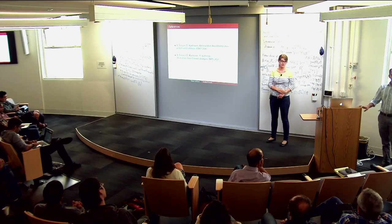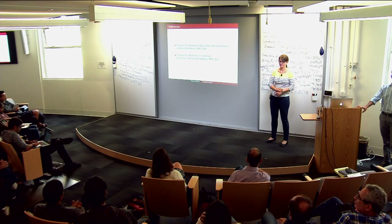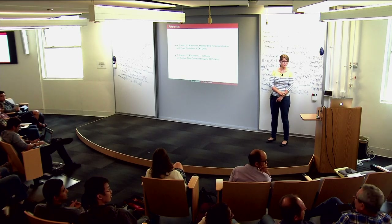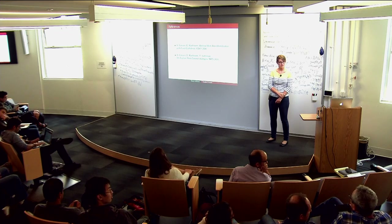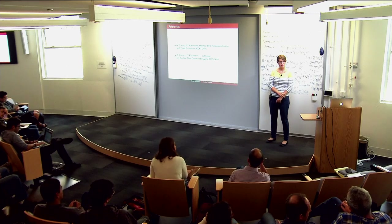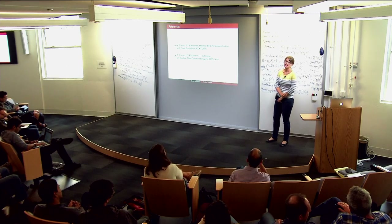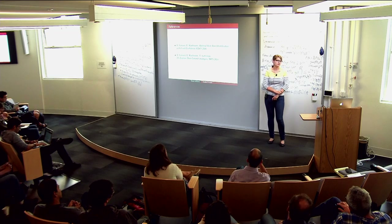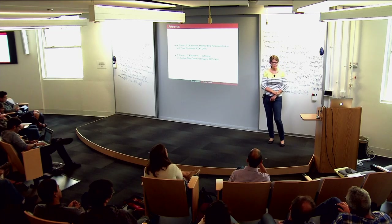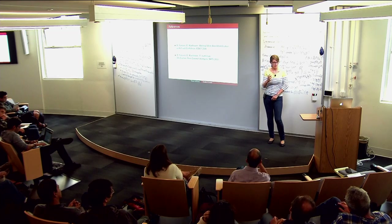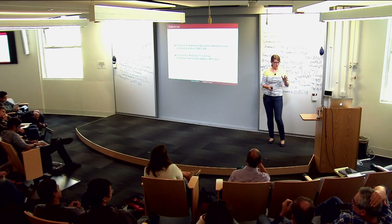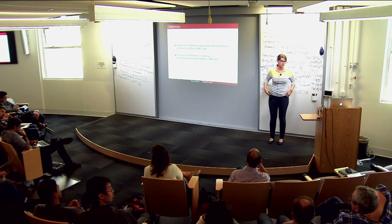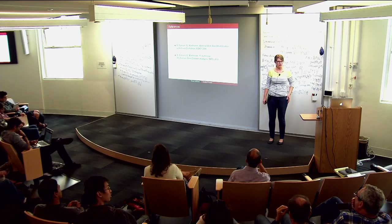Quick question: in your forced exploration phase when you're pulling every arm — I think it's sqrt(T) times, less than any bullet — is sqrt(T) just any sequence going to infinity or is it specifically sqrt(T)? You should take T to some power; log(T) wouldn't be enough. This forced exploration phase is not just a theoretical trick — you have to enforce that all arms are drawn because otherwise you can find issues if you don't add a sufficient exploration phase.